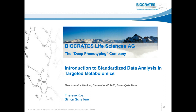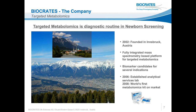First, a short view on Biocrates. The company is located in Innsbruck in Austria, directly in the Alps between Germany and Italy. Founded 14 years ago, Biocrates established a fully integrated mass spectrometry-based platform for targeted metabolomics, which serves as a backbone for biomarker candidates research. We developed a metabolomics kit — the first kit was launched in 2008 — and we also established an in-house analytical service lab where customers can send us samples for targeted metabolomics analysis.